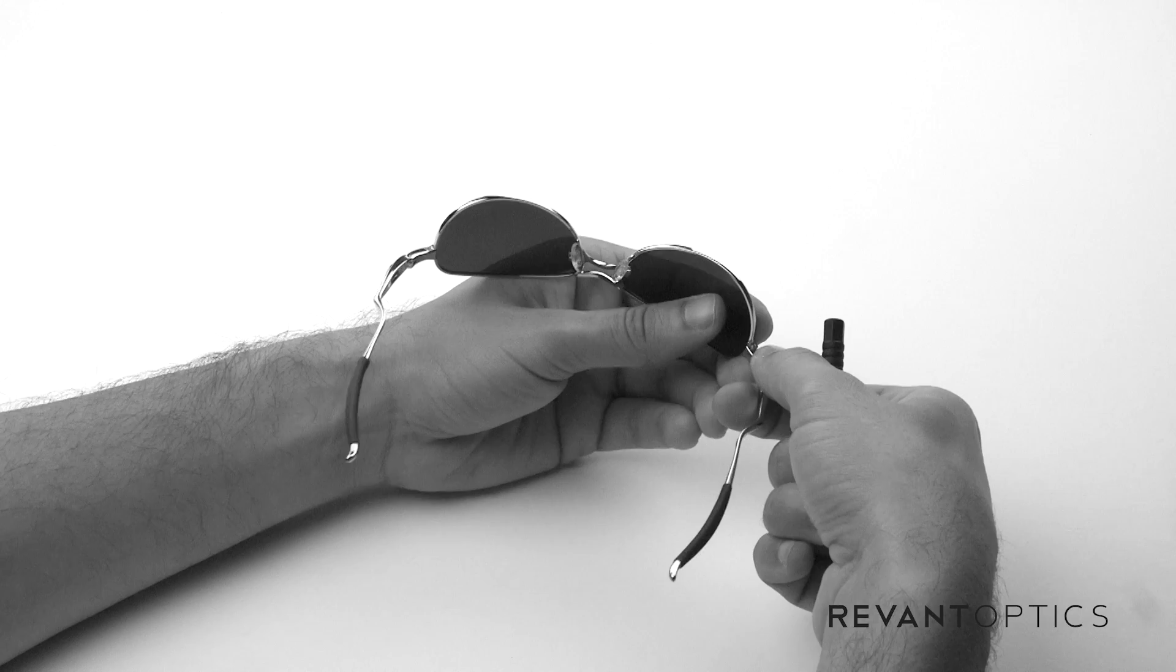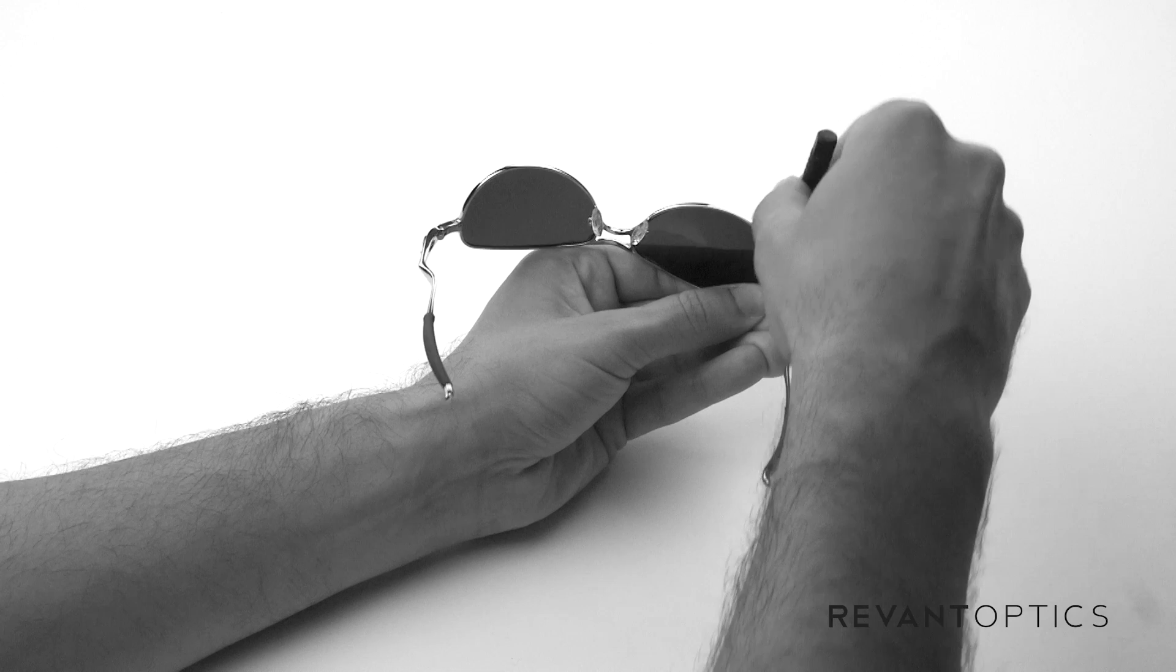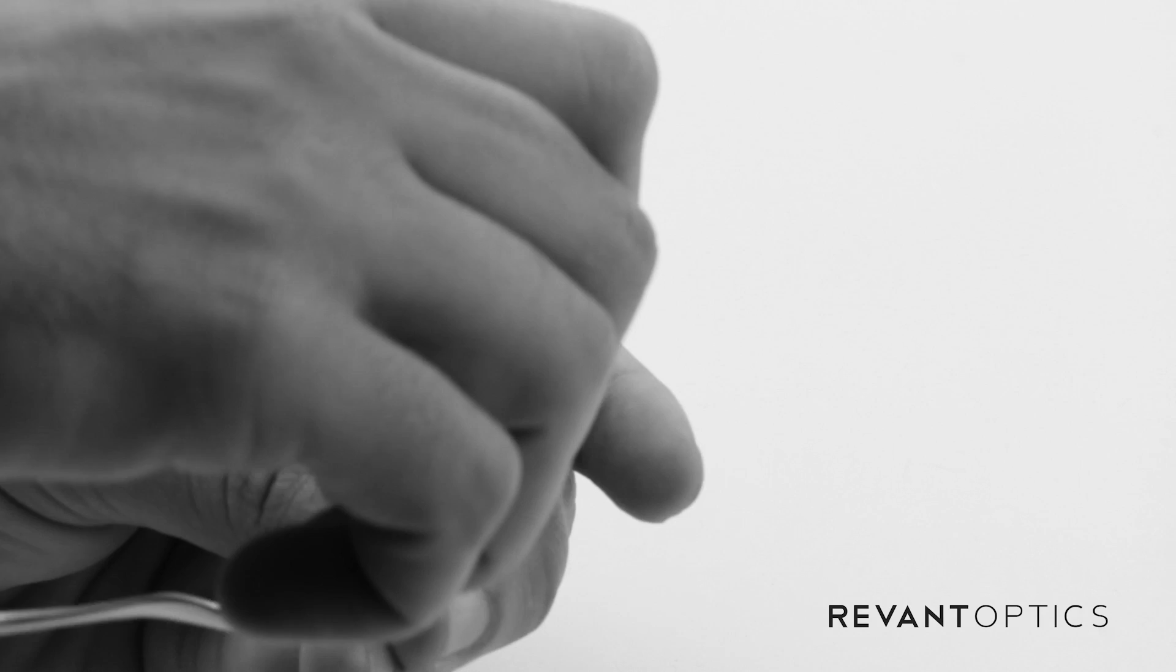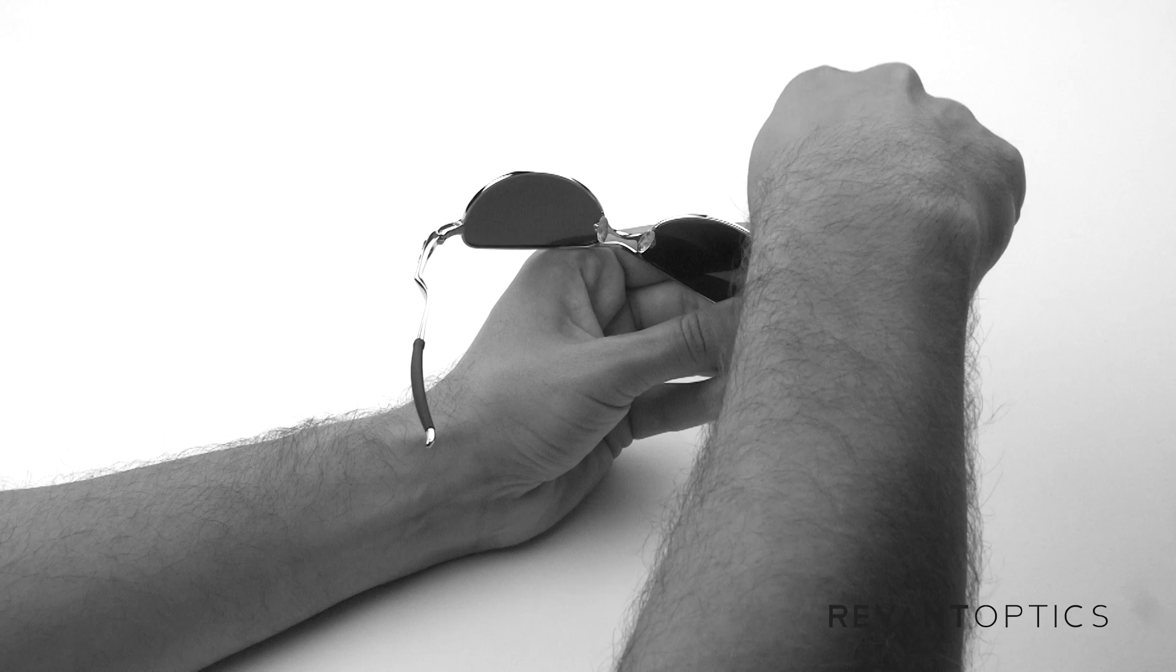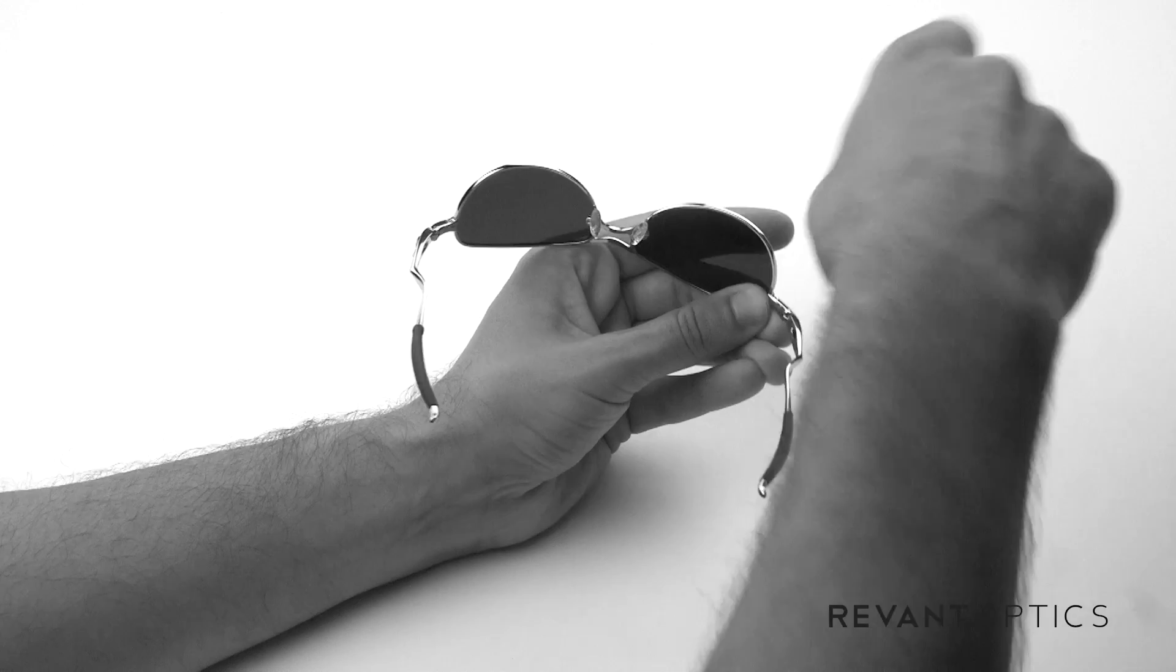...you're gonna go ahead and push on the temple. You'll use your screwdriver here to help with that, but use your other fingers to push on the temple and then push down on where the screw is. And you'll see it pop into place there. And just make sure that the lens is in the groove, and then start turning to the right to tighten that. And once you feel it firm up there, don't turn too much further.